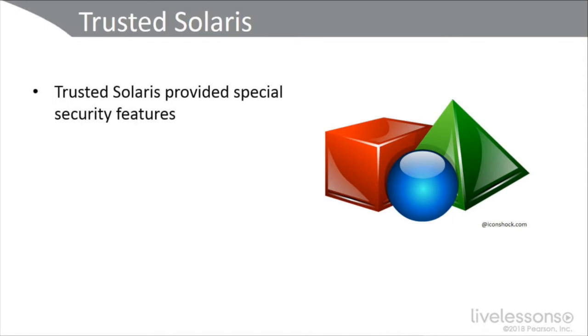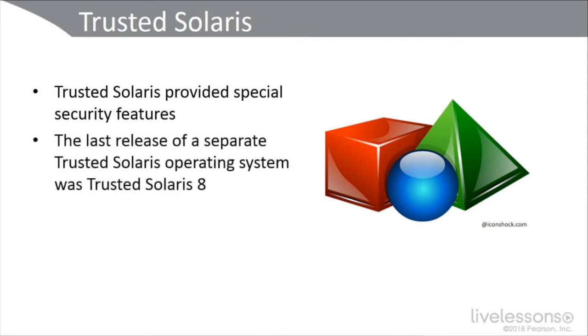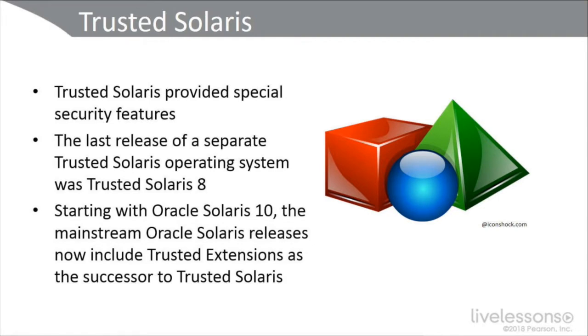Next we have Trusted Solaris. Trusted Solaris provides special security features and historically was a family of security-enhanced operating systems based on Oracle's Solaris operating system. The last release of a separate Trusted Solaris OS was Trusted Solaris 8. Starting with Oracle Solaris 10, the mainstream Oracle Solaris releases now include trusted accessibility extensions. The trusted extensions are now the successor to Trusted Solaris. Because of this, we've eliminated the need to use an Oracle Solaris release that has a modified kernel to take advantage of labeled security environments. Most of the Trusted Solaris features like user rights profiles, mandatory access controls, and file labeling have been incorporated into trusted extensions as a standard part of the Oracle Solaris operating system.